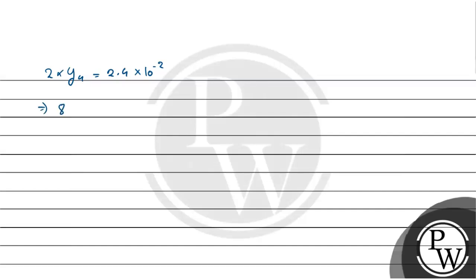So, this is equal to 8 lambda D by d is equal to 2.4 into 10 to the power minus 2. Into small d. Now, small d ka value kya hai? That is 0.3 into 10 to the power minus 3 meter. So, this is equal to 10 to the power minus 3 meter.